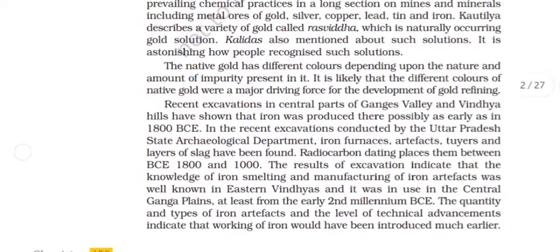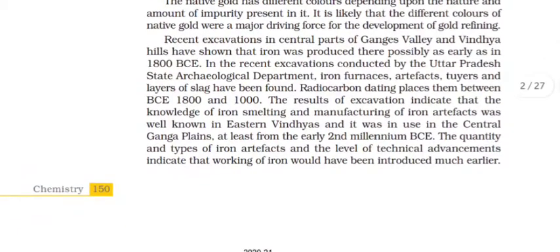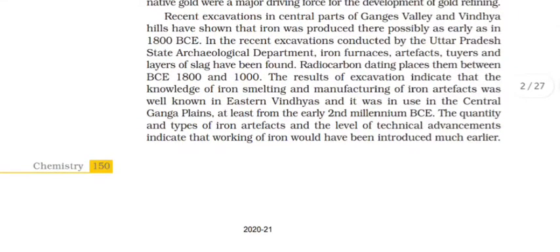Recent excavations in central parts of Ganges Valley and Vindhya Hills have shown that iron was produced there possibly as early as in 1800 BCE. In the recent excavations conducted by the Uttar Pradesh State Archaeological Department, iron furnaces, artifacts, tires, and layers of slag have been found. Radiocarbon dating places them between BCE 1800 and 1000.